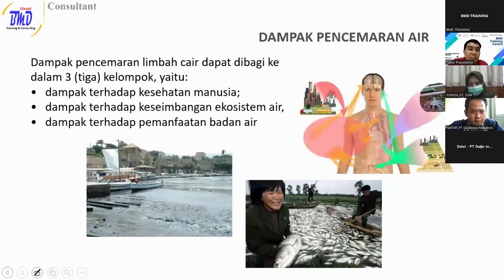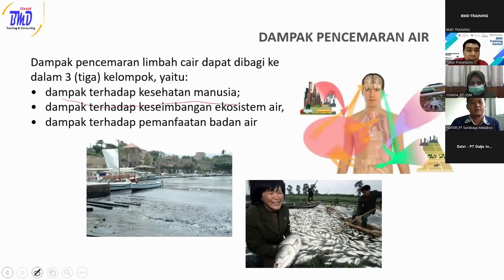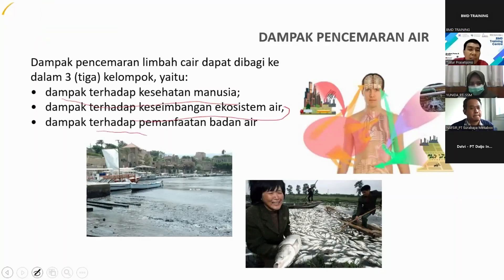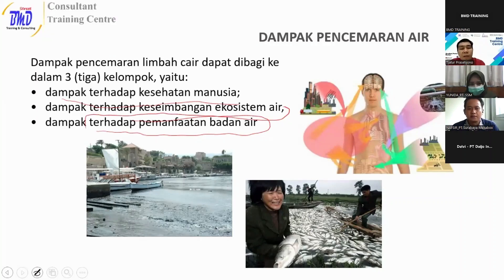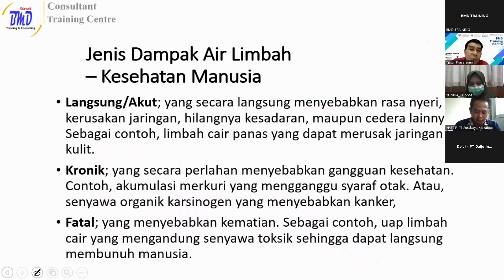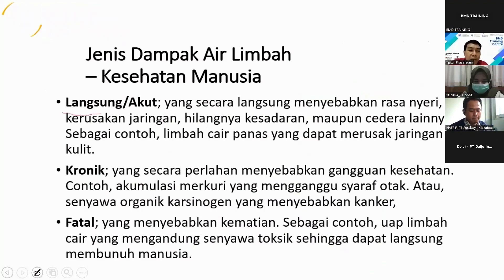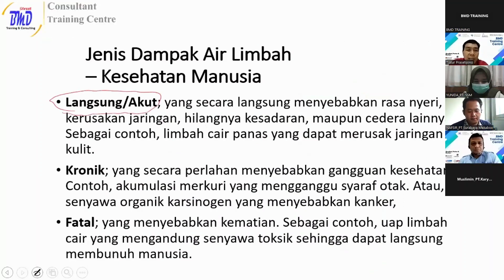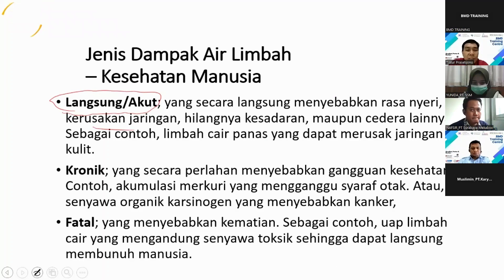Kemudian dampak pencemaran air. Dampak pencemaran air ini dibagi dalam tiga kelompok: pertama, dampak terhadap kesehatan; kedua, dampak terhadap keseimbangan ekosistem air; ketiga, dampak terhadap pemanfaatan badan air. Contohnya, tadinya sungai kelas satu untuk bahan baku PDAM, lalu jadi kelas dua atau kelas empat. Untuk dampak terhadap kesehatan manusia, ada tiga kelompok: yang pertama dampak langsung atau akut — dampaknya langsung dirasakan — misalnya luka, pingsan, atau cedera lainnya.